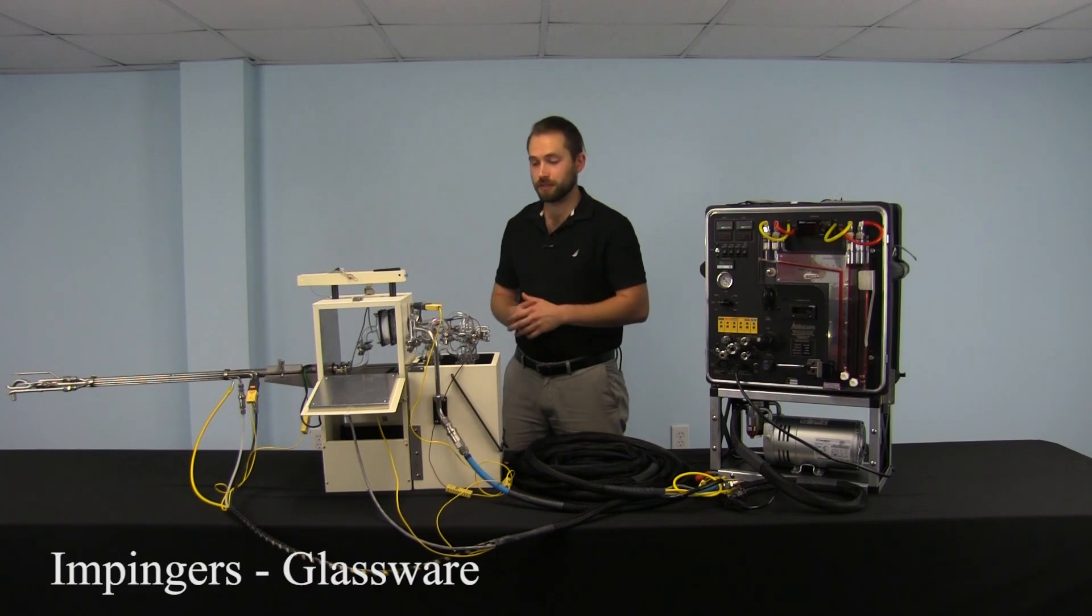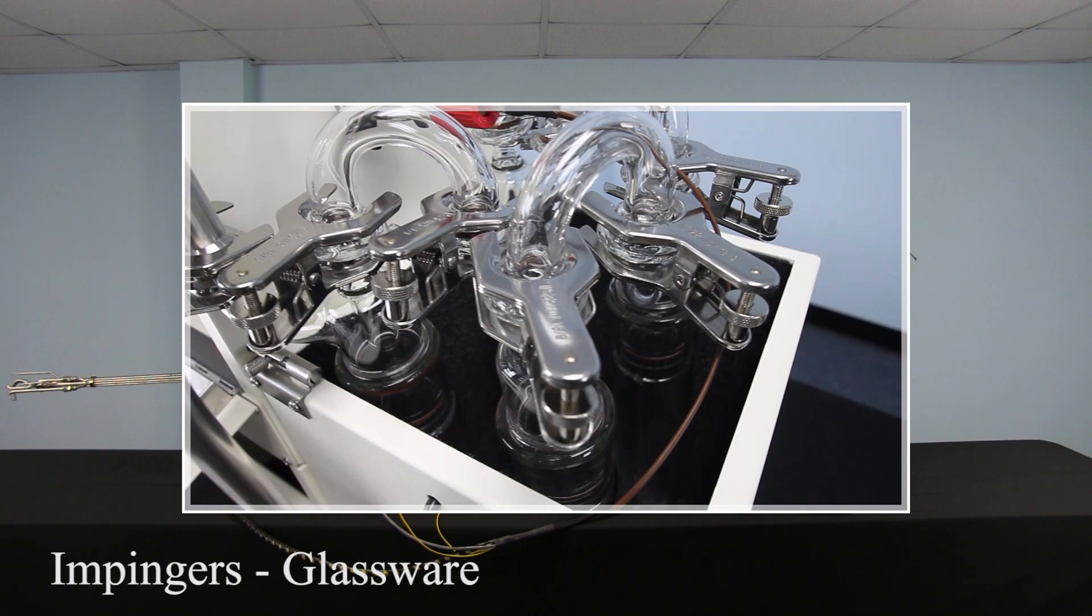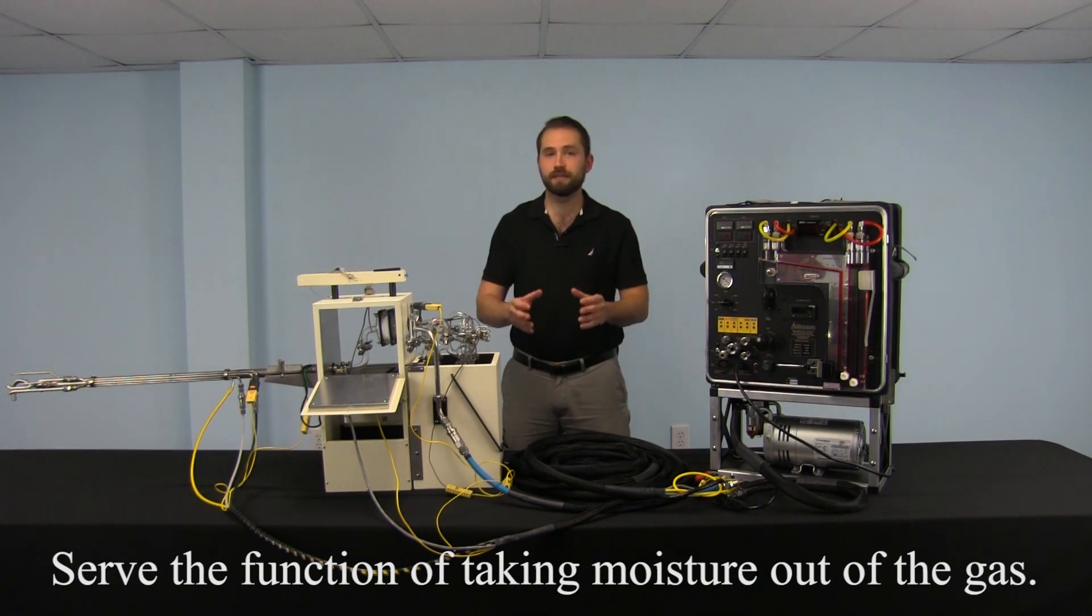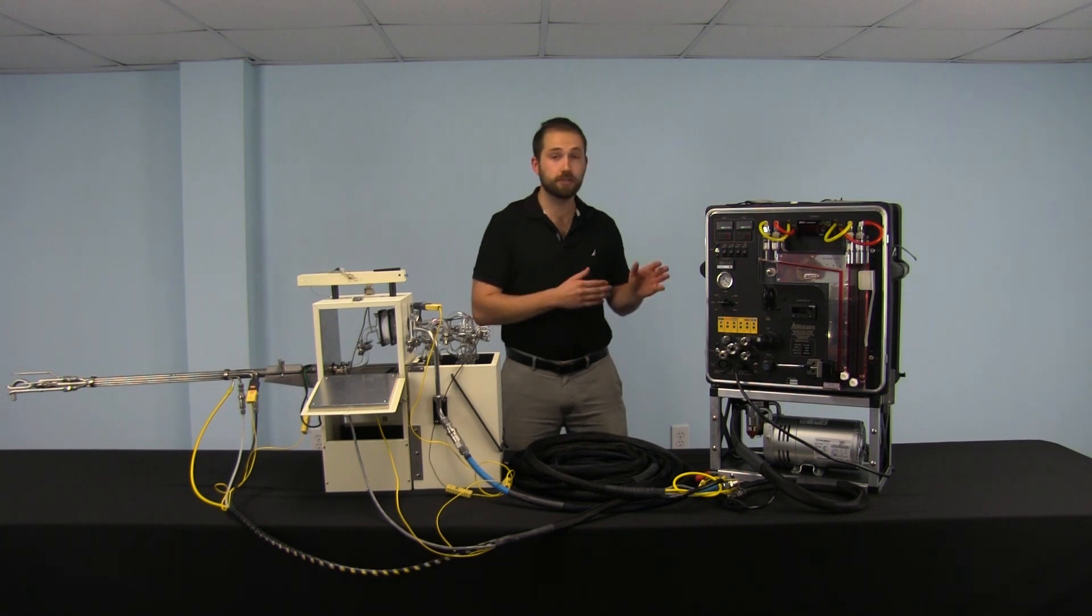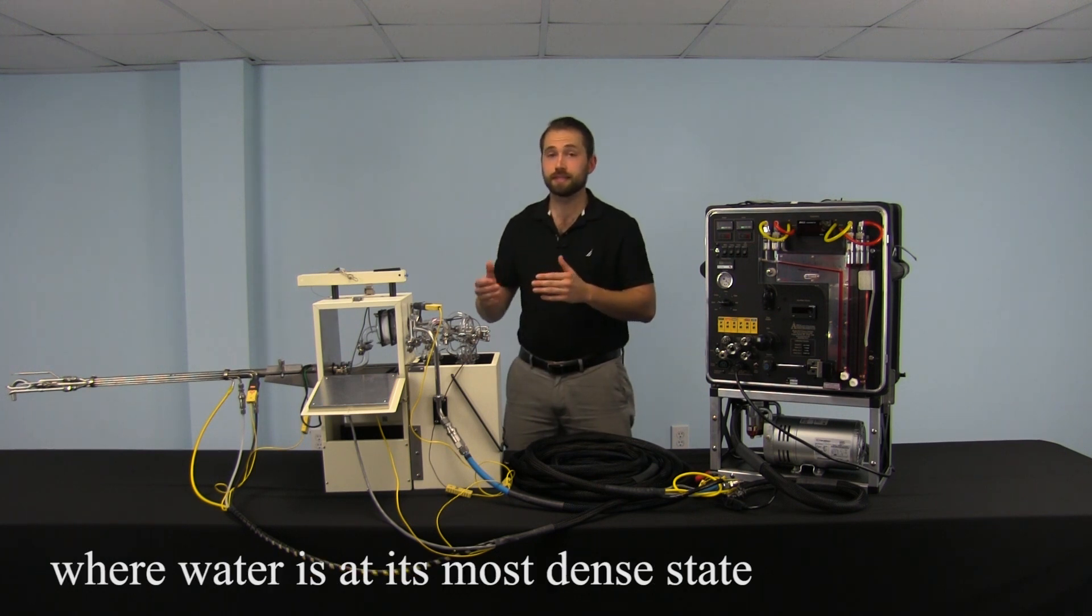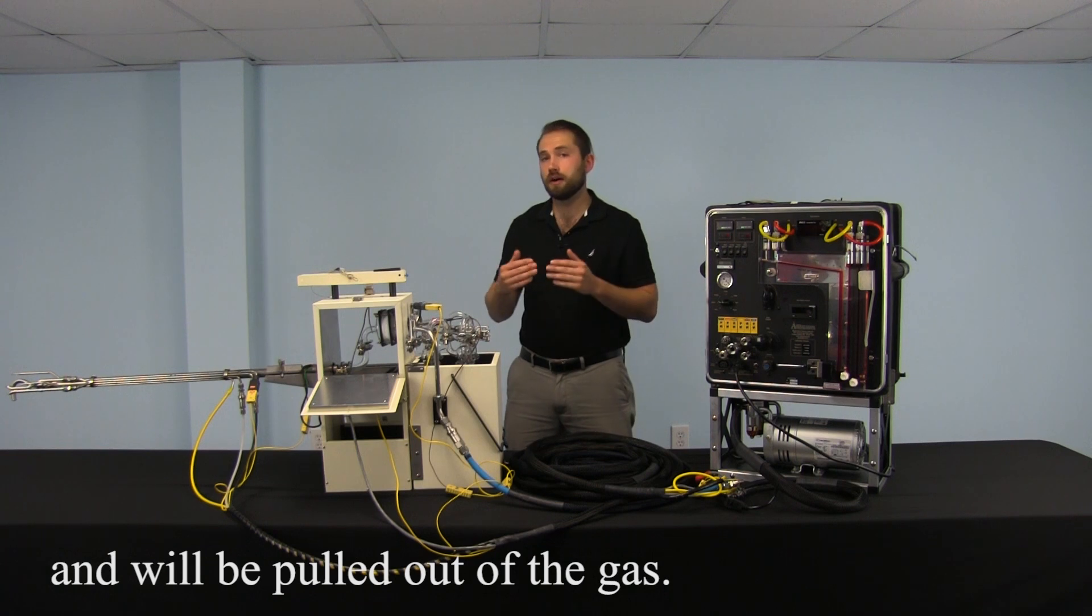Then we have the impingers. In a typical Method 5 glassware setup we have four impingers all designed for the purpose of taking the moisture out of the gas before it reaches the dry gas pump. And we try to keep the temperature in the cold box down to four degrees Celsius, which is where water is at its most dense point and it is most likely to be pulled out of the gas.